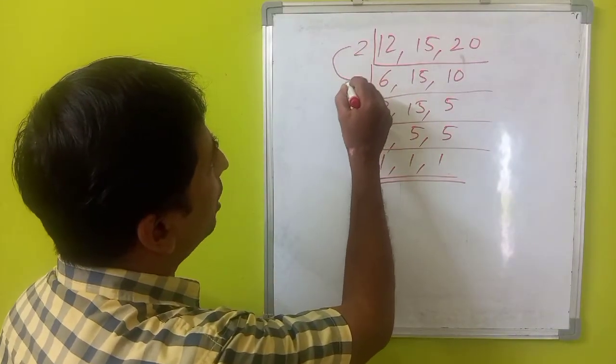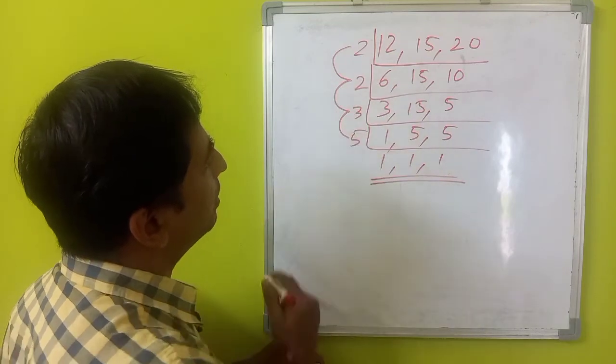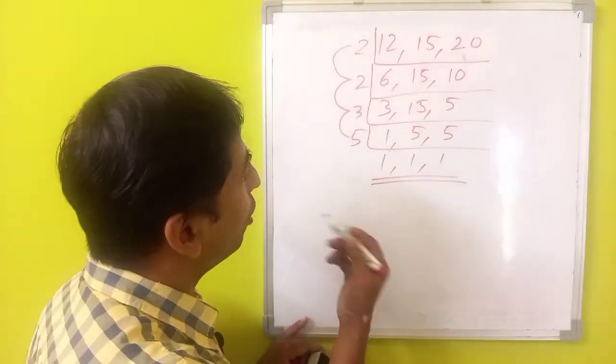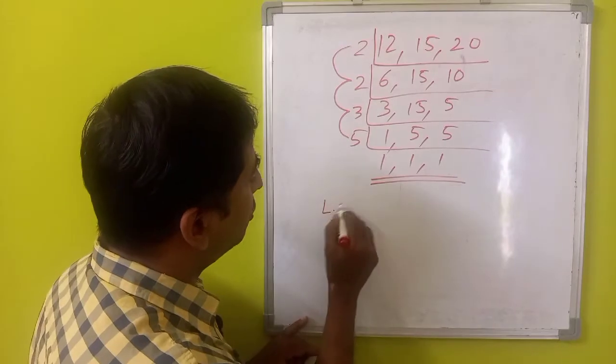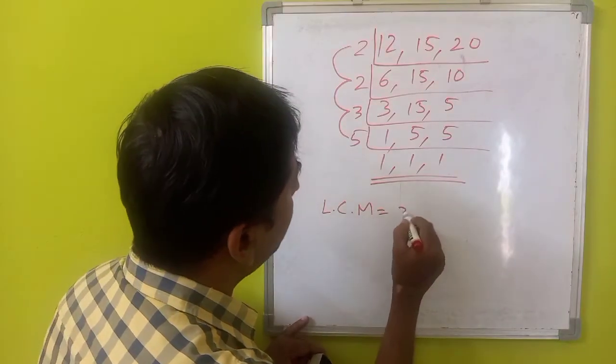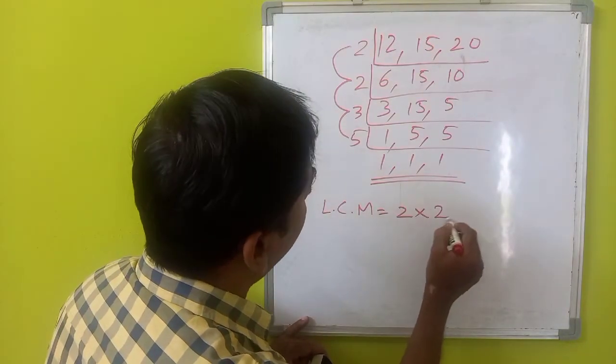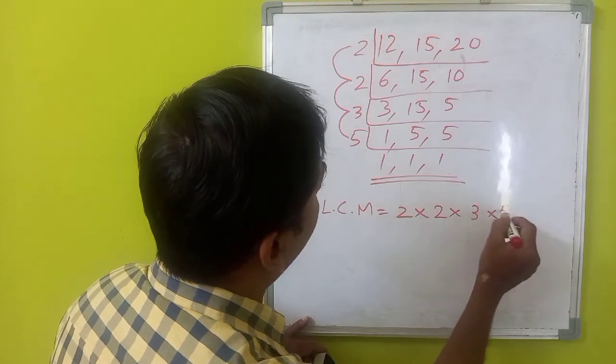Now, this, the product of these three, these four numbers will be the LCM, the least common multiple. The least common multiple of these numbers will be 2 multiplied by 2 multiplied by 3 multiplied by 5.